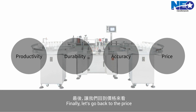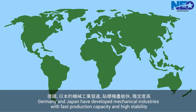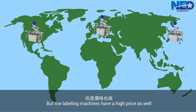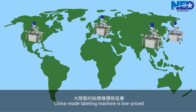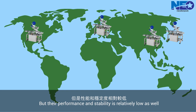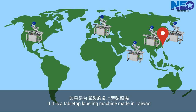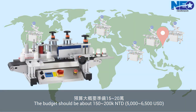Finally, let's go back to price. Germany and Japan have well-developed mechanical industries with fast production capacity and high stability, but their labeling machines come with a high price. China-made labeling machines are low-priced, but their performance and stability are relatively lower as well. India has even cheaper labeling machines, but performance cannot be expected. For a tabletop labeling machine made in Taiwan, the budget should be about 150,000–200,000 NT dollars.